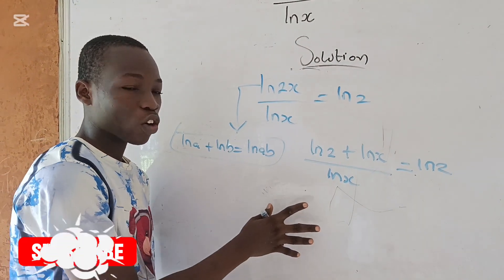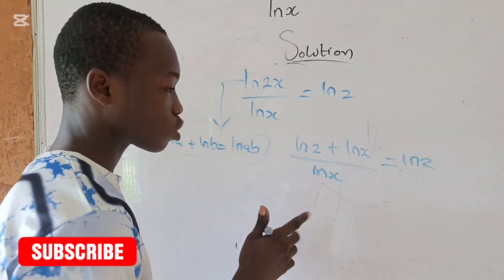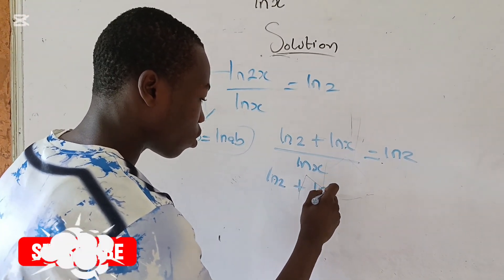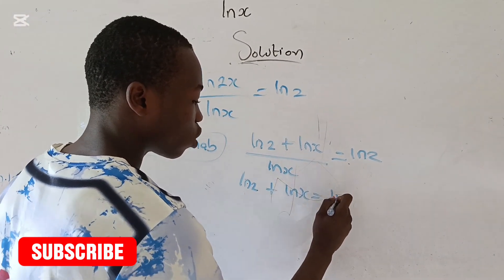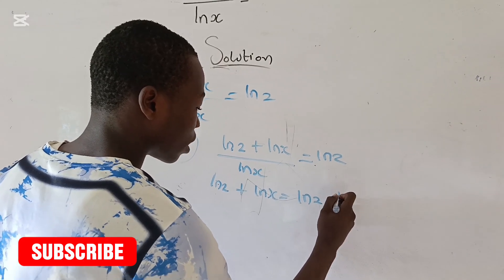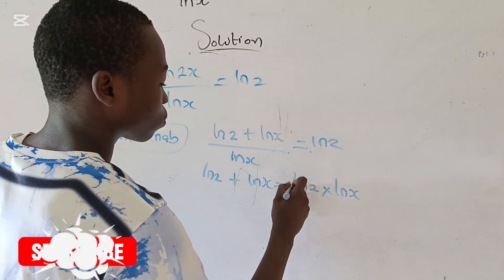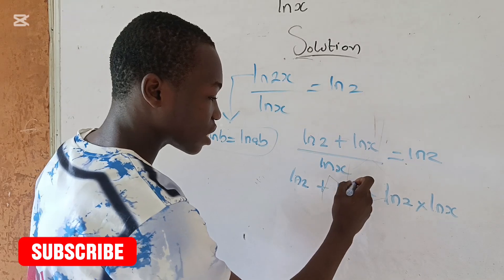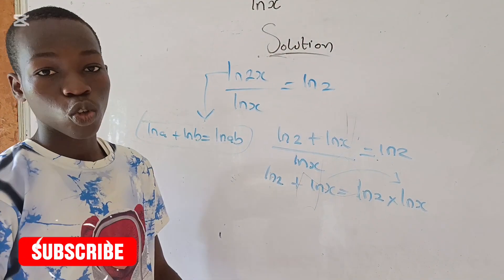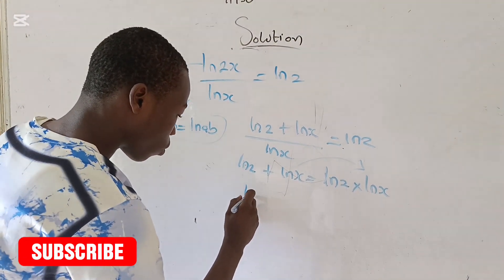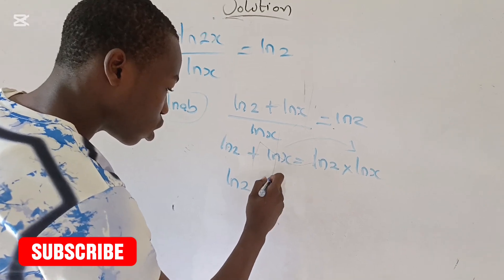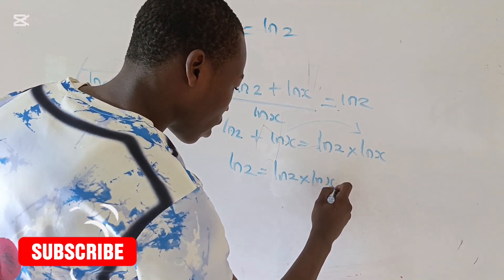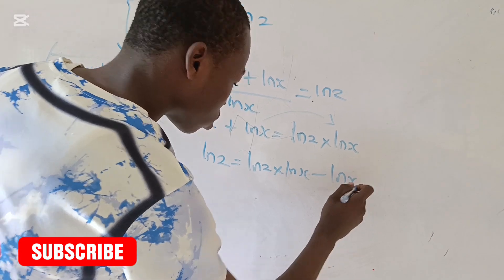So here now we are going to cross-multiply. When you cross-multiply, you are going to have the natural log of 2 plus the natural log of x equals the natural log of 2 multiplied by the natural log of x. Now let's collect like terms — we are going to have the natural log of 2 equals the natural log of 2 multiplied by the natural log of x minus the natural log of x.